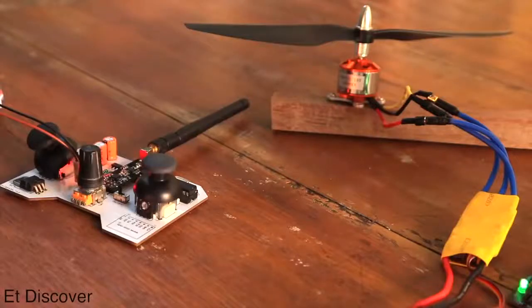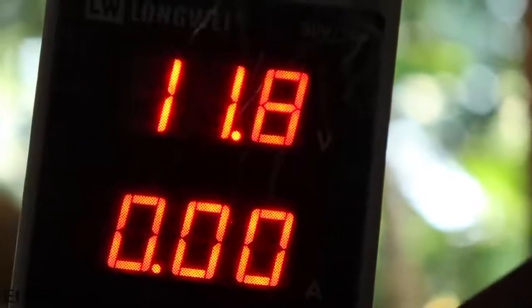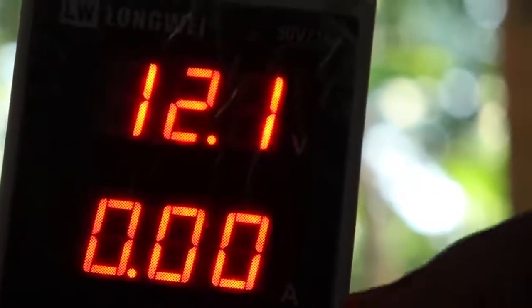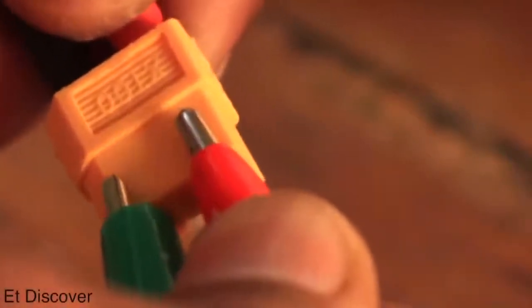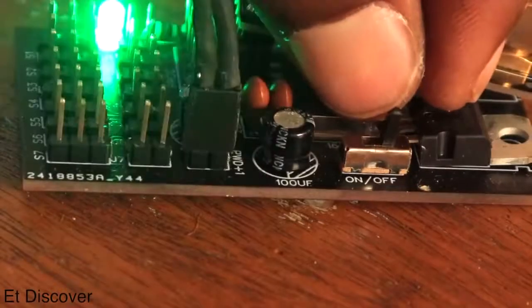Now time for the transmitter. I need a 12V power source for the transmitter. I'm using my lab power supply as a 12V power source. I connect this with my transmitter and turn on the switch. At the same time I turn on my receiver switch.